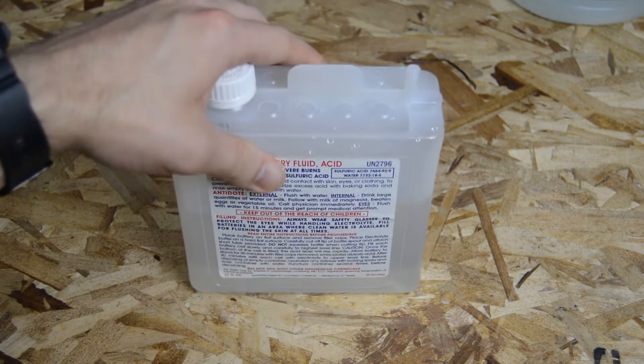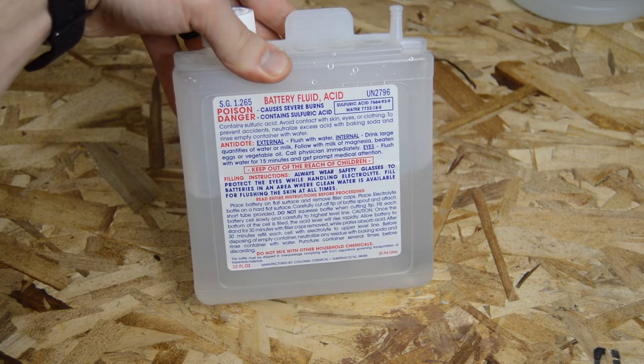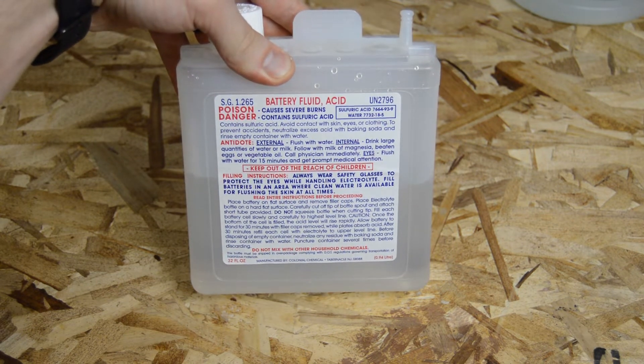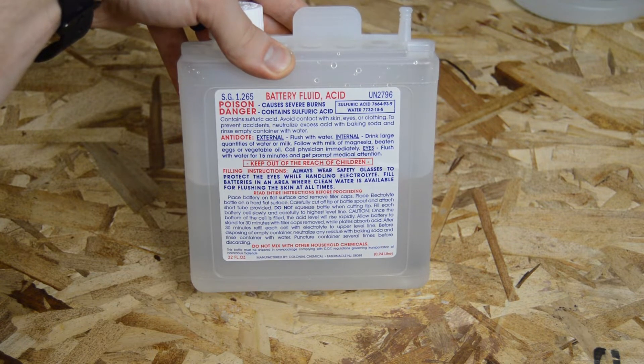I will also be using concentrated sulfuric acid in the form of battery acid. A typical concentration of battery acid is about 4 moles per liter of sulfuric acid. This acid will be the source of sulfate for the nickel sulfate crystals.